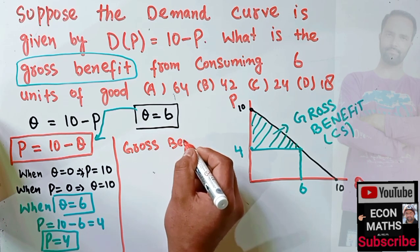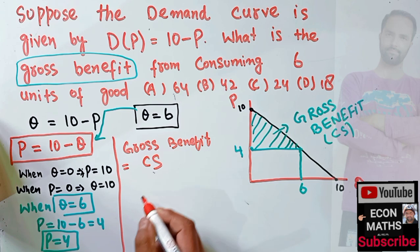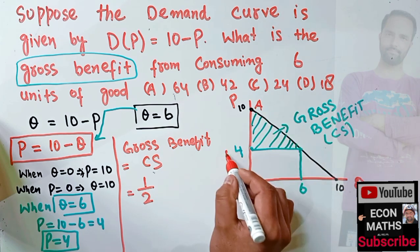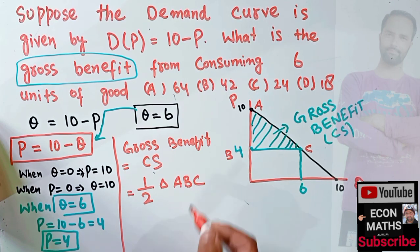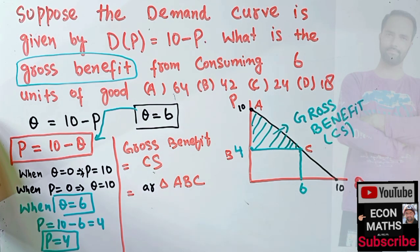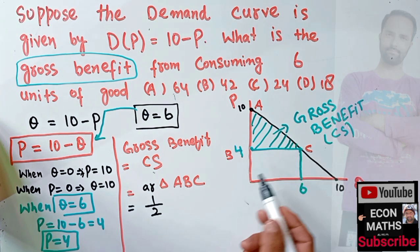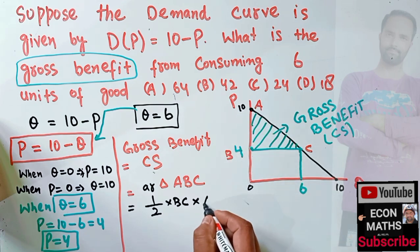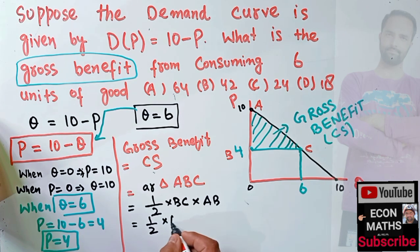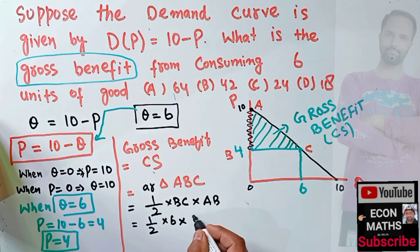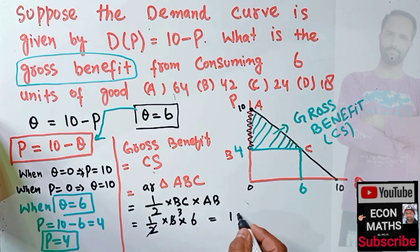Gross benefit or consumer surplus equals one half the area of triangle ABC, which is a right-angle triangle. The area equals one half times base BC times height AB. BC goes from 0 to 6, so BC = 6. AB equals 10 minus 4 = 6. So the area = one half times 6 times 6 = 18.